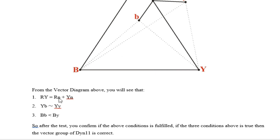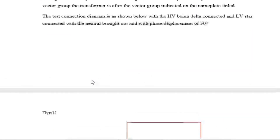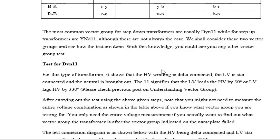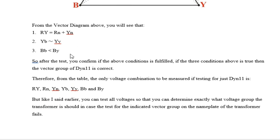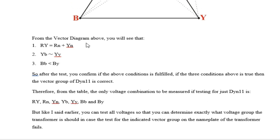If you measure these values and they don't satisfy the conditions, you know it is not DYN 11. All the required values — red-to-neutral, yellow-to-neutral, R-Y, Y-B — are already recorded in your table. So you use the table to check the conditions. If you are only testing for DYN 11, the measurements you need are: R-Y, R-n, Y-n, Y-B, y-y, B-B, and B-Y.